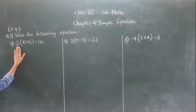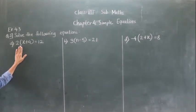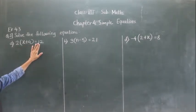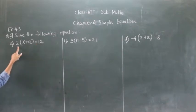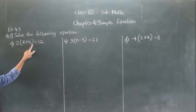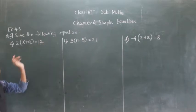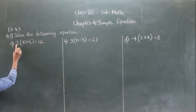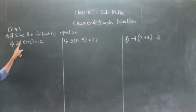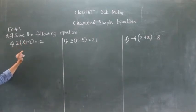2 into bracket x plus 4 is equal to 12. How to solve this equation? 2 into bracket x plus 4 — what is the sign here? It is multiplication.